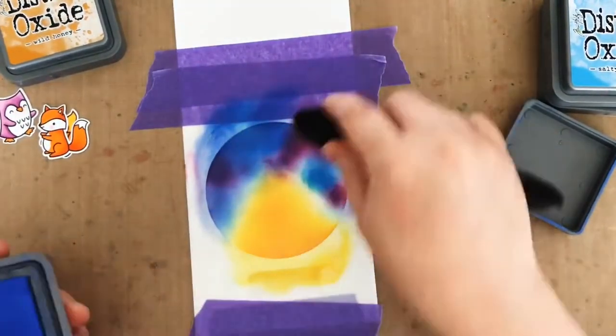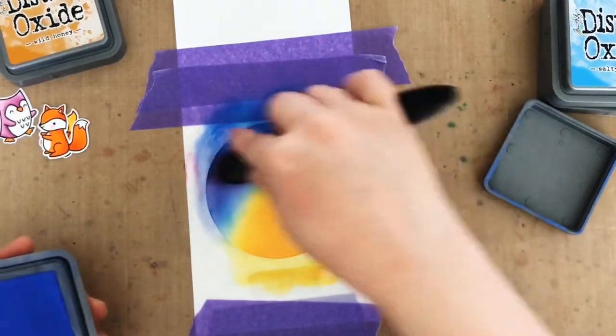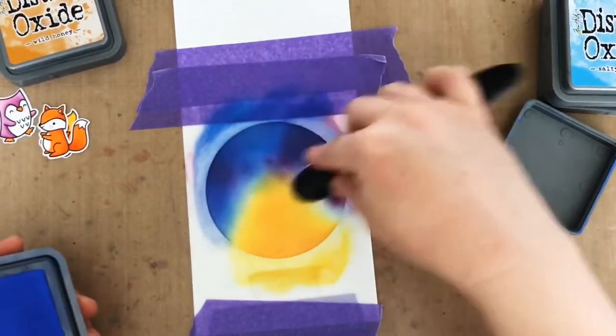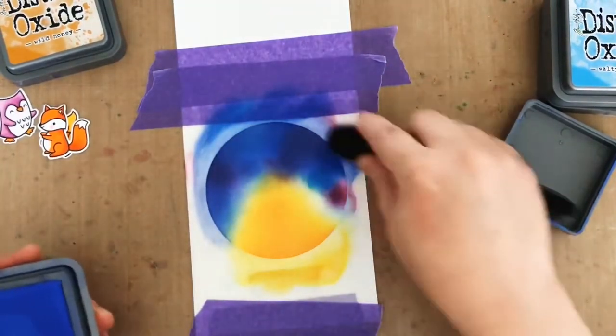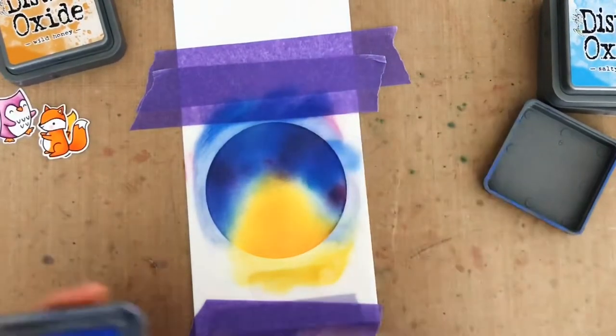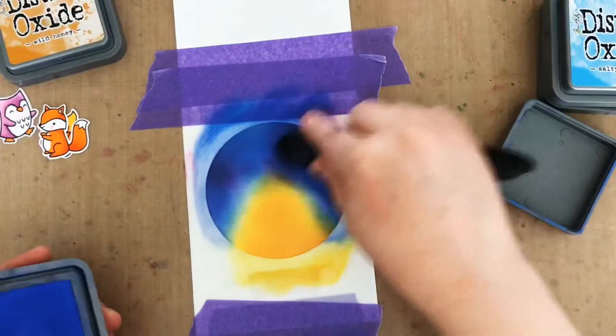And I think I have to go back in at some point, add a little more Wild Honey. It's a practicing thing for me too. I've never done a firelight glow, so it's kind of fun. So I'm just blending until I'm happy with how it looks.